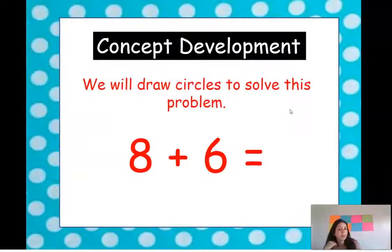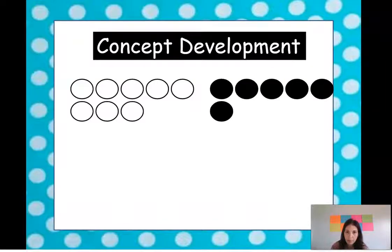Here's a new problem. Eight plus six. We will draw circles to solve this problem. So on your paper or whiteboard go ahead and draw eight and six circles, putting five in a row. Okay so we have eight and then we have six. Does yours look like this? Nice job if it does.